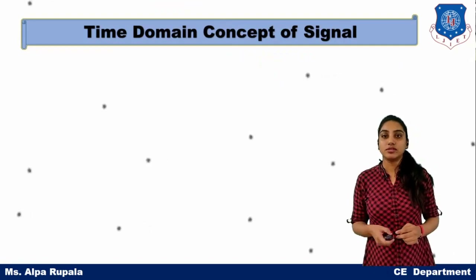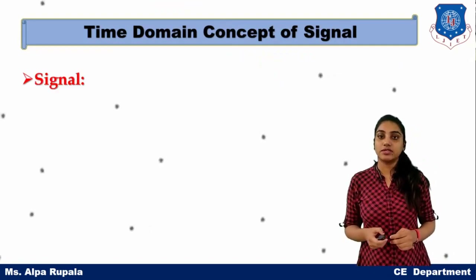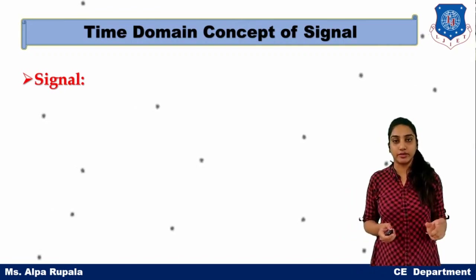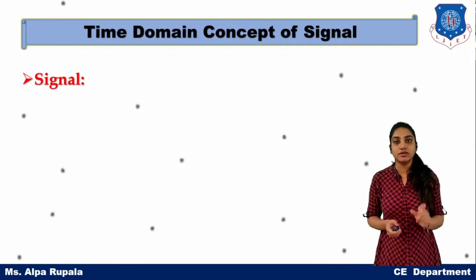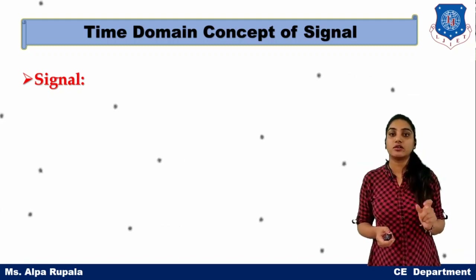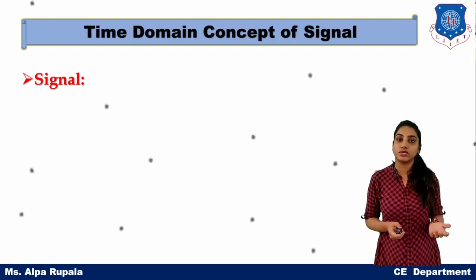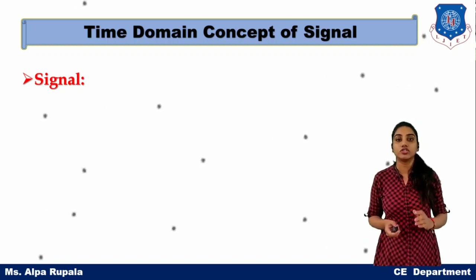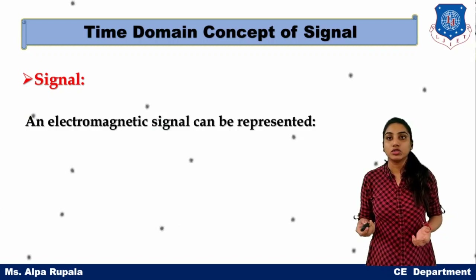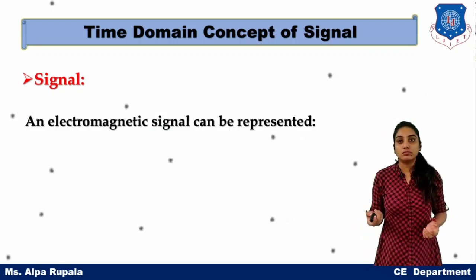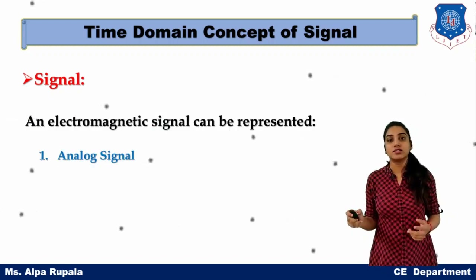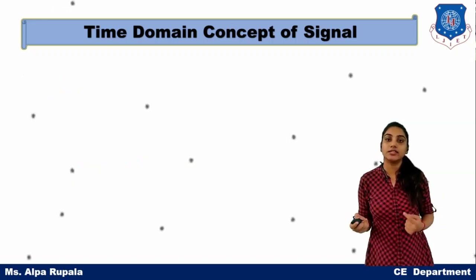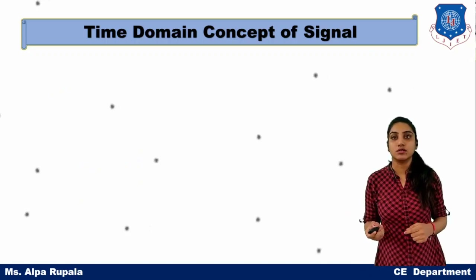In the time domain concept, the signal is represented as a function of time. In the frequency domain concept, the signal is represented as a function of frequency. We can further divide the signal into two basic types: the first one is analog signal and the second one is digital signal.